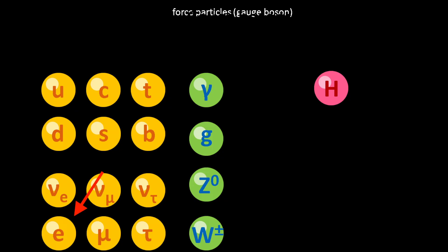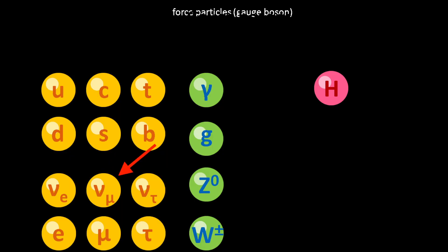So leptons: we have electrons, which I'm sure all of us know. Muons — muons are fundamental particles that exist in cosmic rays. And tau particles. Then we have the three very interesting types: electron neutrino, muon neutrino, and tau neutrino. Neutrinos do not interact with anything. There are actually millions of solar neutrinos penetrating my body right now as I'm speaking, but I don't feel them because they don't interact with me.